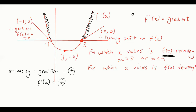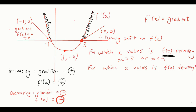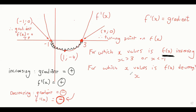What decreasing actually means: when we look at decreasing, it's where the gradient is negative. That's the same as saying it's where the first derivative is negative. Now what we must understand is that this graph is the first derivative - its y-values represent the gradient of the original graph. So if we want to see where the y-values are negative, that would be all of these y-values over here. So you would say that x must be bigger than minus one and smaller than positive three.